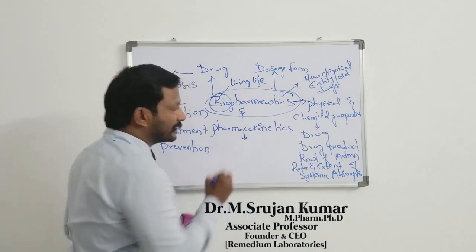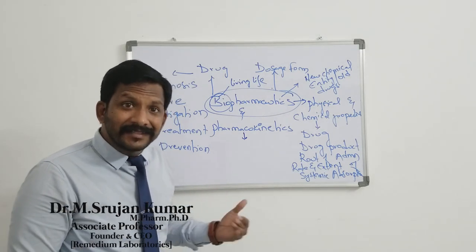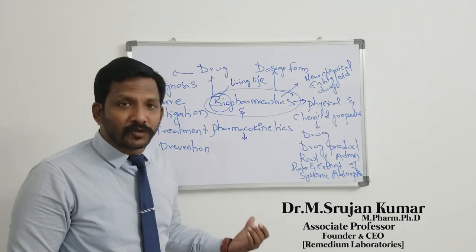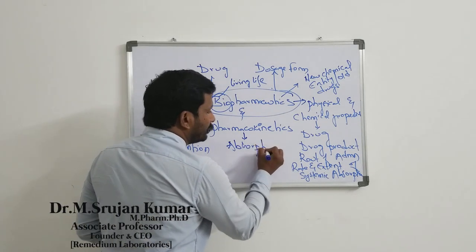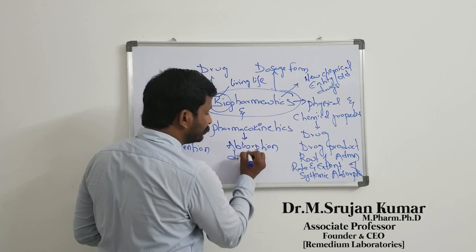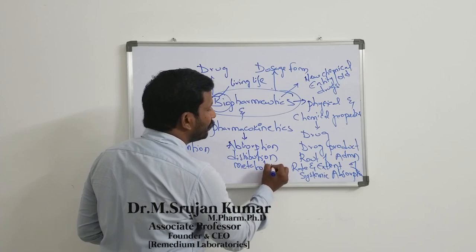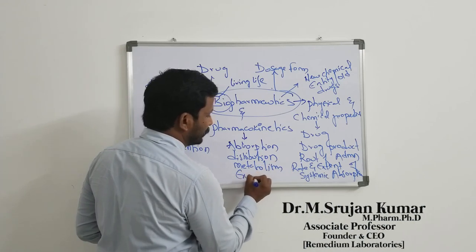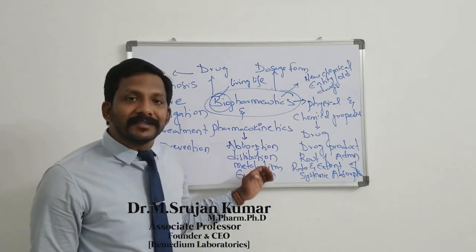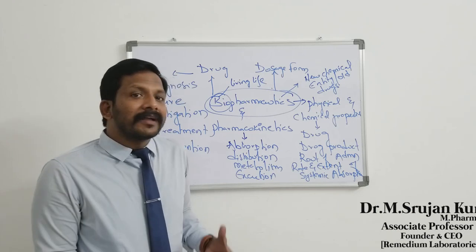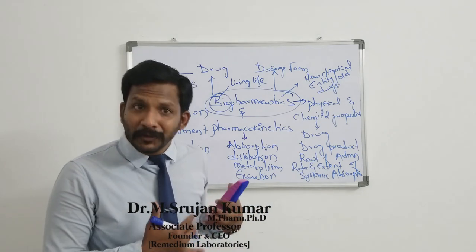Next, what do you mean by the term pharmacokinetics? Pharmacokinetics is a science that deals with the kinetics of absorption, distribution, metabolism, and excretion. But what are these kinetics?